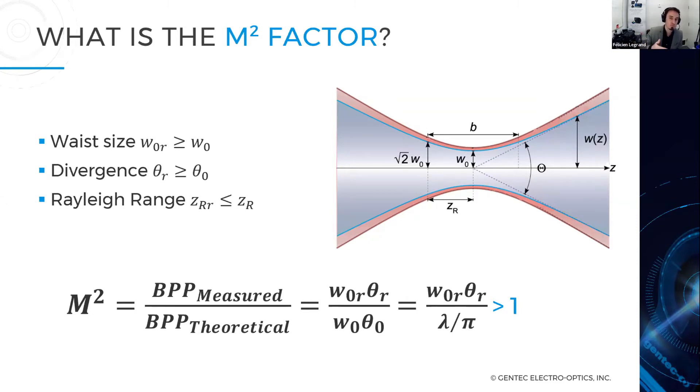That's the beam parameter product of an ideal Gaussian beam. So you take your beam parameter product measured and divide by this, and you get by definition a value that's above one. Once again, if you want to achieve the highest beam quality as possible with a Gaussian beam, you will want this value to be as close as one as possible.